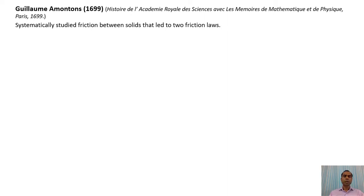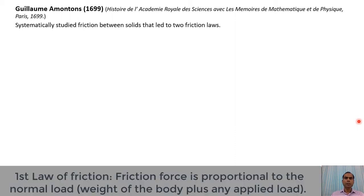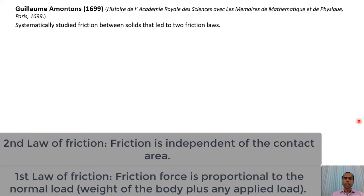The very first person to do a very systematic study of friction was Amontons, and that is why two of the laws of friction are known as Amontons' laws. In 1699, Amontons produced these friction laws. The first law states that friction force is proportional to the normal load. The second law states that friction is independent of the apparent contact area.